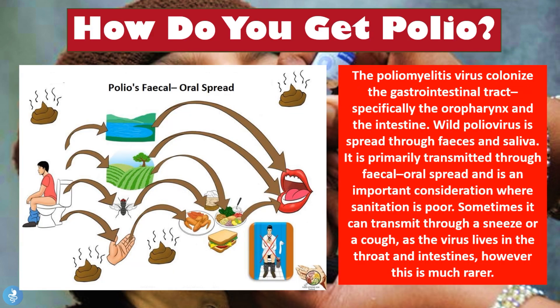The poliovirus colonizes the gastrointestinal tract, specifically the oropharynx and the intestine. The virus is spread through feces and saliva and is primarily transmitted through fecal-oral spread, which is an important consideration where sanitation is poor. Because the virus also lives in the throat and intestines, it can sometimes be transmitted through a sneeze or a cough, though this is much rarer.